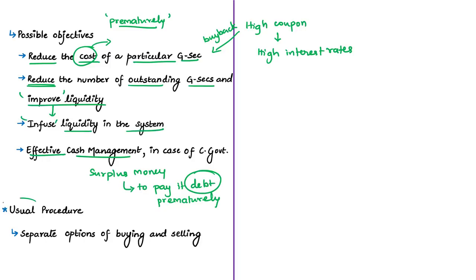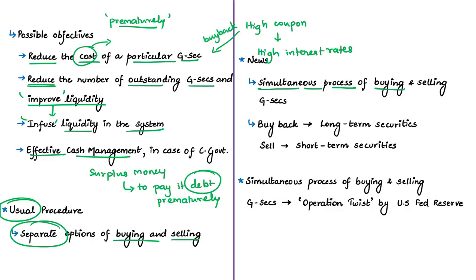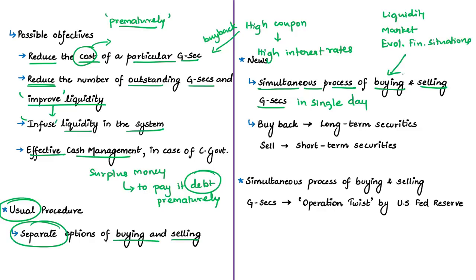Usually we see RBI either buying or selling government securities. But in today's news article, RBI has planned to simultaneously buy and sell government securities in a single day. RBI said that after reviewing current liquidity and market conditions and assessing the evolving financial conditions in the country, it has decided to conduct simultaneous purchase and sale of government securities under open market operations — specifically on 23rd December 2019, buying government securities worth ₹10,000 crore and selling government securities worth ₹10,000 crore.